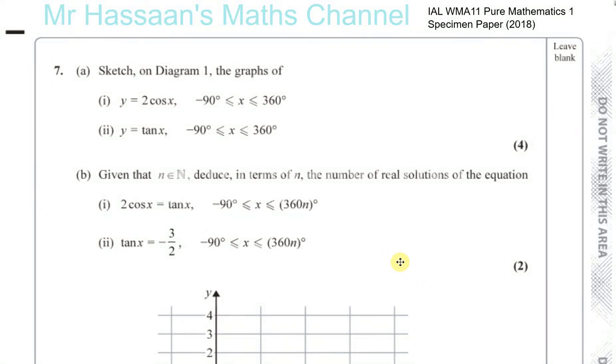Now for question number 7 from the P1, the Pure Mathematics 1 International A Level Specimen Paper. We have a question about the trig graphs. In part A, we're asked to sketch the graphs of two of the trig graphs on the same pair of axes.